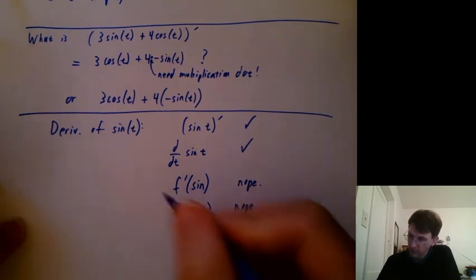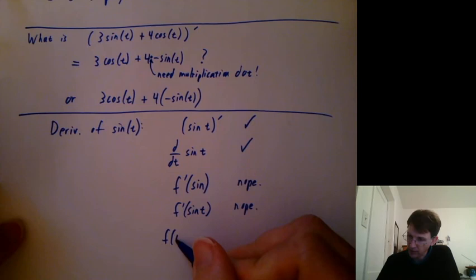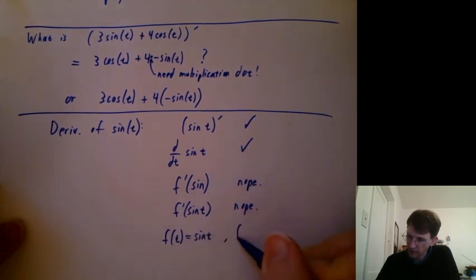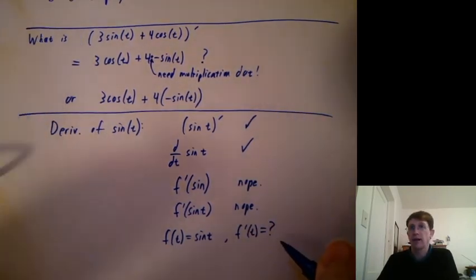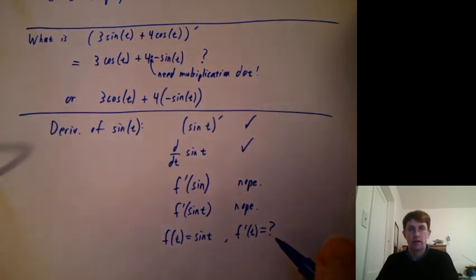Another way to ask what's the derivative of sine t, if we really want to do something like this, what we have to do is define f of t to equal sine t and then say f prime of t equals question mark. That's asking what is the derivative of sine t? Okay.